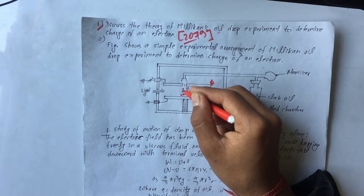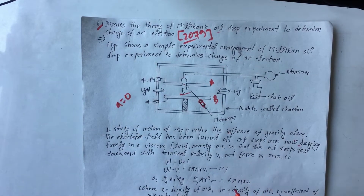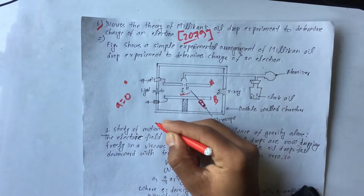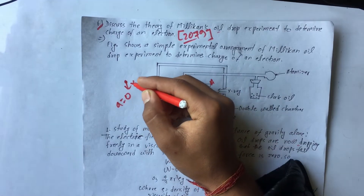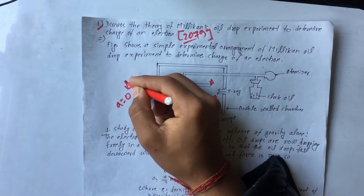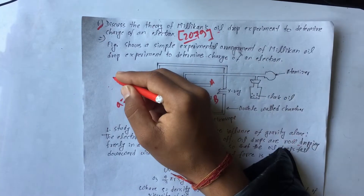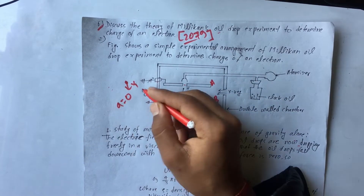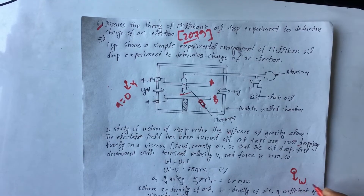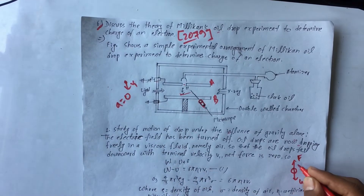The terminal velocity is V1. The oil drop has a total downward motion at terminal velocity V1, under the influence of viscous force.